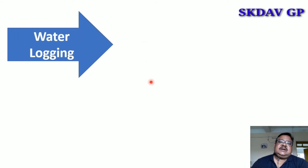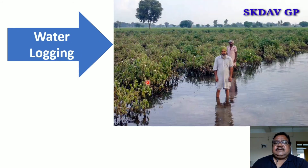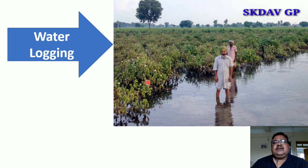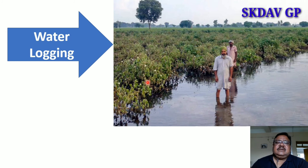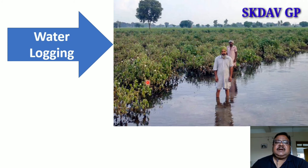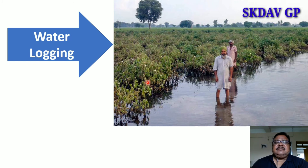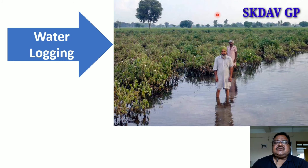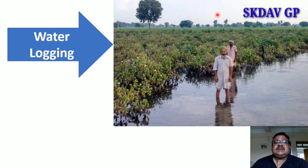Water logging refers to stagnation of water on top of the soil surface, or the presence of a high water table inside the soil. Water logging occurs when there is too much water in a plant's root zone, which decreases the oxygen available to the roots. Water logging can be a major constraint to plant growth and production, and under certain conditions will cause plant death.